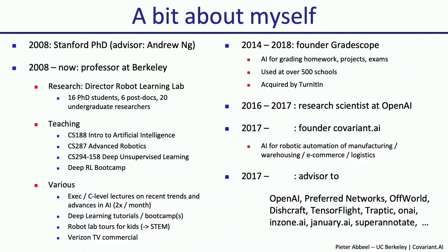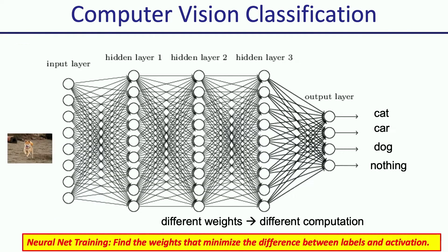Thank you for the very nice introduction. I think we should skip right over that and dive right into the materials. I want to first discuss computer vision classification as one of the main example domains where AI has had a lot of impact recently — let's take a look at what it looks like under the hood.